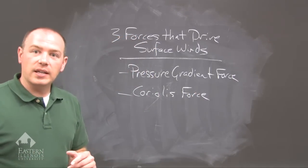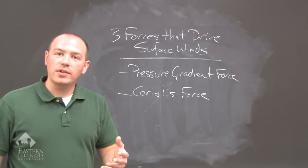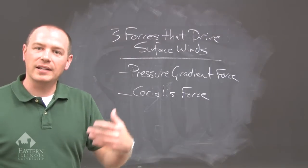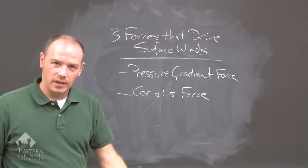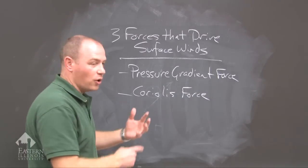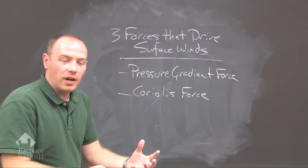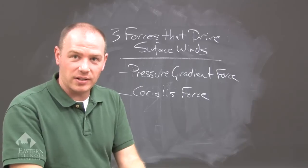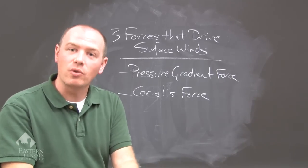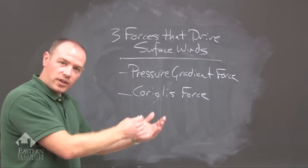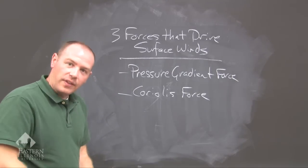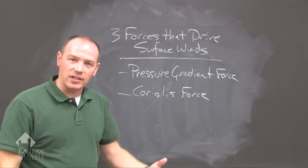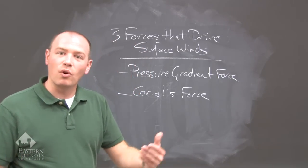The second force is the Coriolis force. The Coriolis force is the influence of Earth's rotation on an object that is not attached to the Earth. In the Northern Hemisphere, objects are diverted to the right because they're not attached to Earth's rotation. In the Southern Hemisphere, they are diverted to the left.